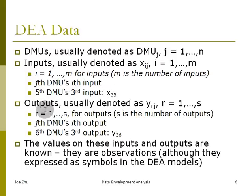And of course, we also need an output. So the s here is the number of outputs. So you see y_36, that is the third output for DMU 6. Now, remember, although they are represented as x and y, that's the standard notation in DEA. These x's and y's are observations. So these are the given data. You know the values on all the x's and y's. The information that you need to decide later on is actually the weights, the weights that decide the convex combination.